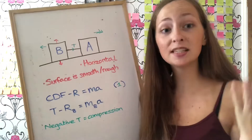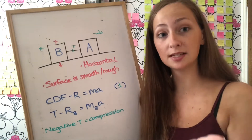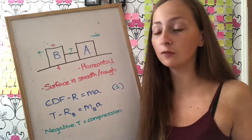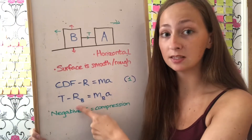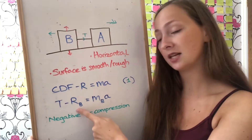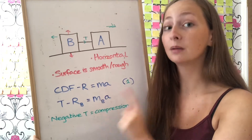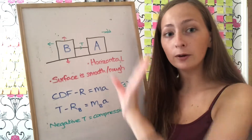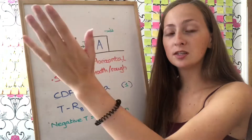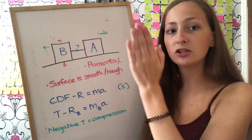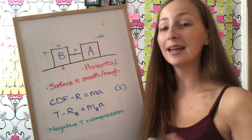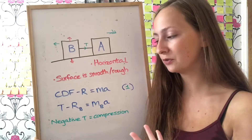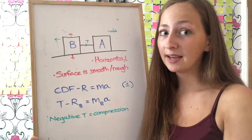To find the tension between the car and caravan, you consider just the caravan separately. So it's T minus B's resistance equals B's mass multiplied by the total acceleration. Just like the vertical case where it was tension minus weight going upwards, here going horizontally it's tension minus resistance equals ma. If the tension turns out to be negative, that means it's a compression force.